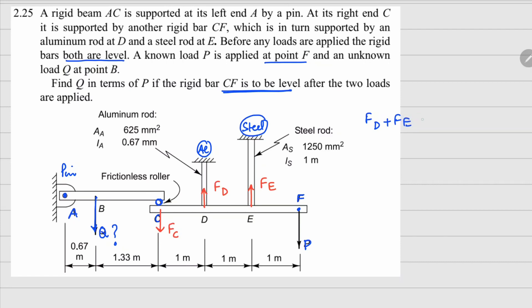Now if I do the force balance for this member right here, you can see your FD plus FE which is going up will balance your FC plus P. That's the force in the y direction. And if I write down the moment balance about this point C right here, I will have your FD times 1 meter.